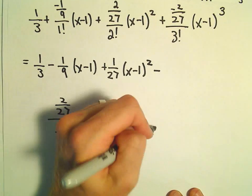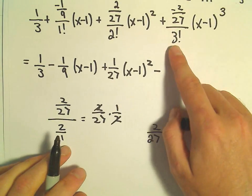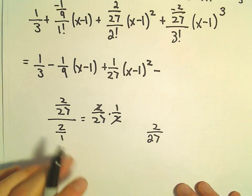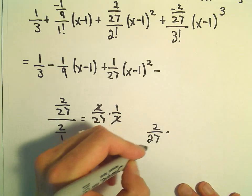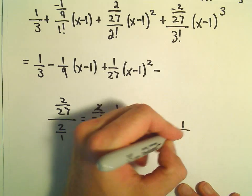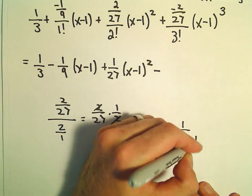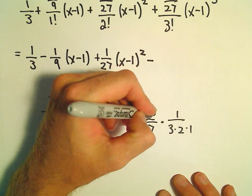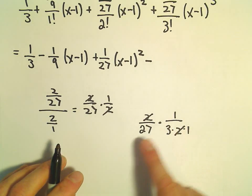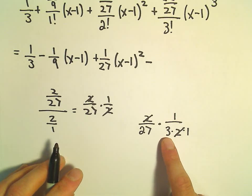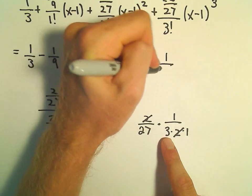And then we're going to have negative, let's see, 2 over 27 when we divide by 3 factorial. That's dividing by 3 times 2 times 1, so that's going to be equivalent to multiplying by 1 over 3 times 2 times 1. So the 2's are going to cancel out, so the result will be left with 1 over 27 times 3, so that's going to give us 1 over 81.